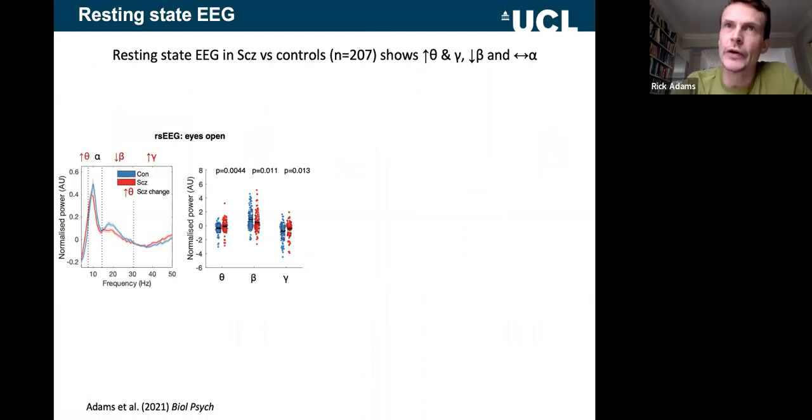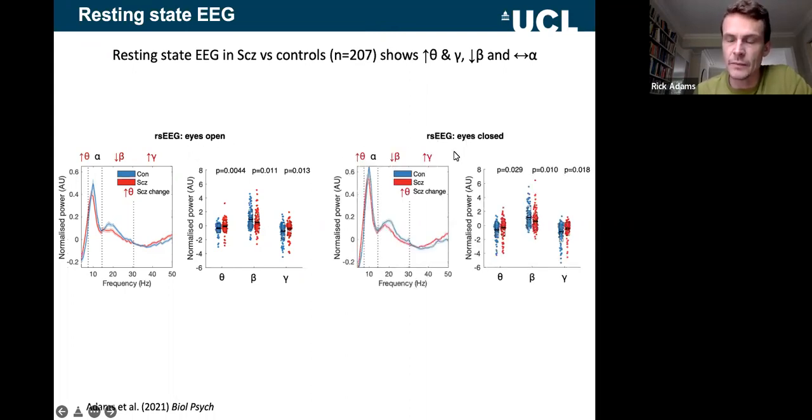Just to kind of rattle through the differences in data features between groups before we get onto the modeling results, essentially in the data analysis, we didn't really see anything new, we were really replicating findings that others have seen, which is reassuring but not novel. In the resting state EEG, we saw an increase in gamma and theta power in the power spectrum and a decrease in beta in the patients here shown in red, in both the eyes open data and in the eyes closed data.